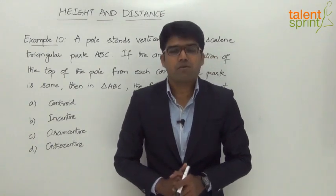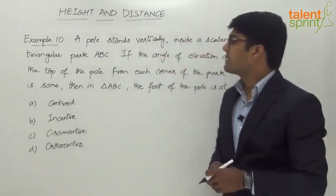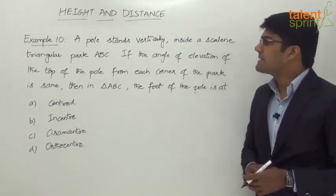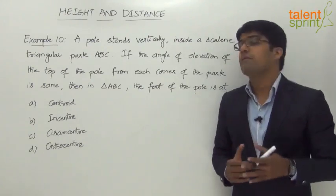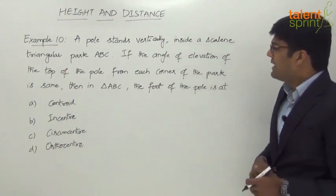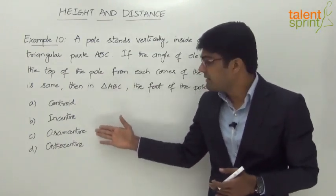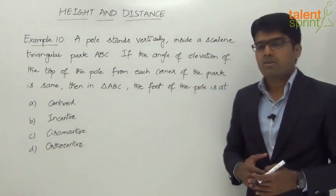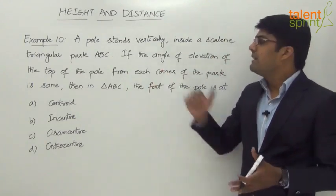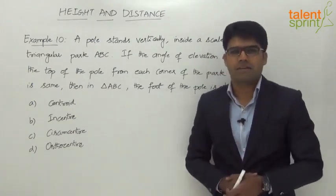This is the last example from the topic of height and distance, which is different from all the questions solved so far. A pole stands vertically inside a scalene triangular park ABC. If the angle of elevation of the top of the pole from each corner of the park is the same, then in triangle ABC the foot of the pole is at what point? The answer options are centroid, incenter, circumcenter, and orthocenter.